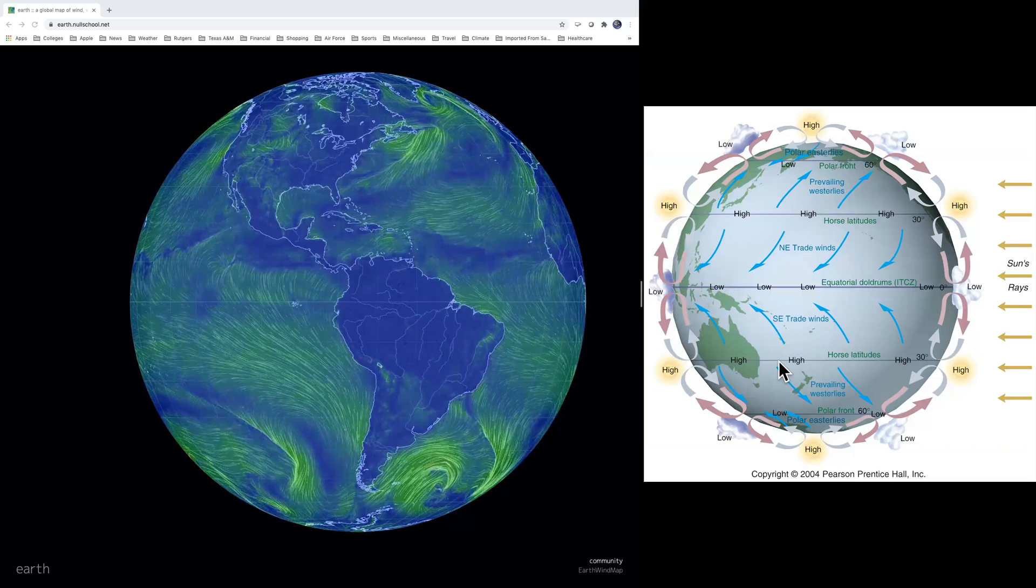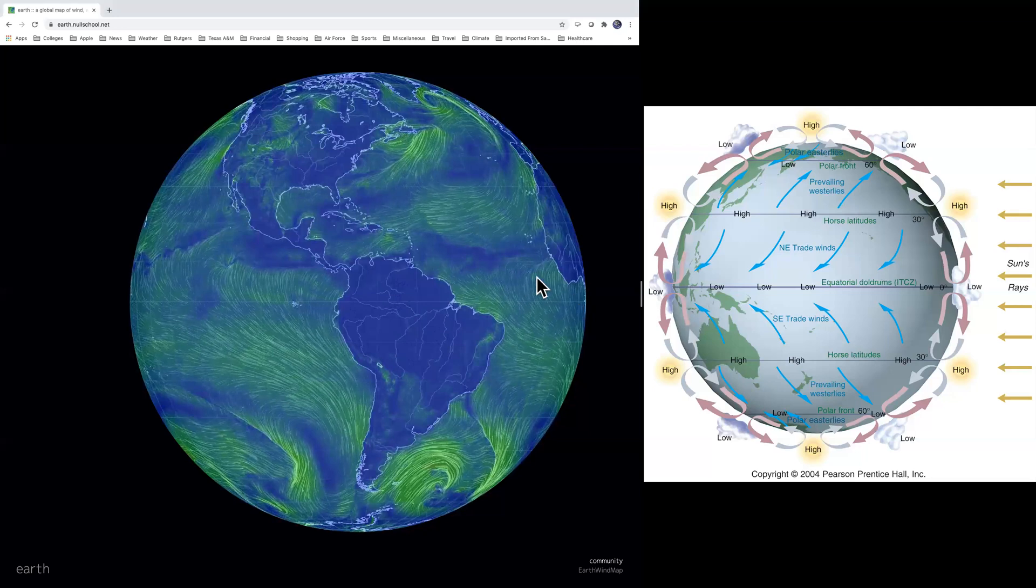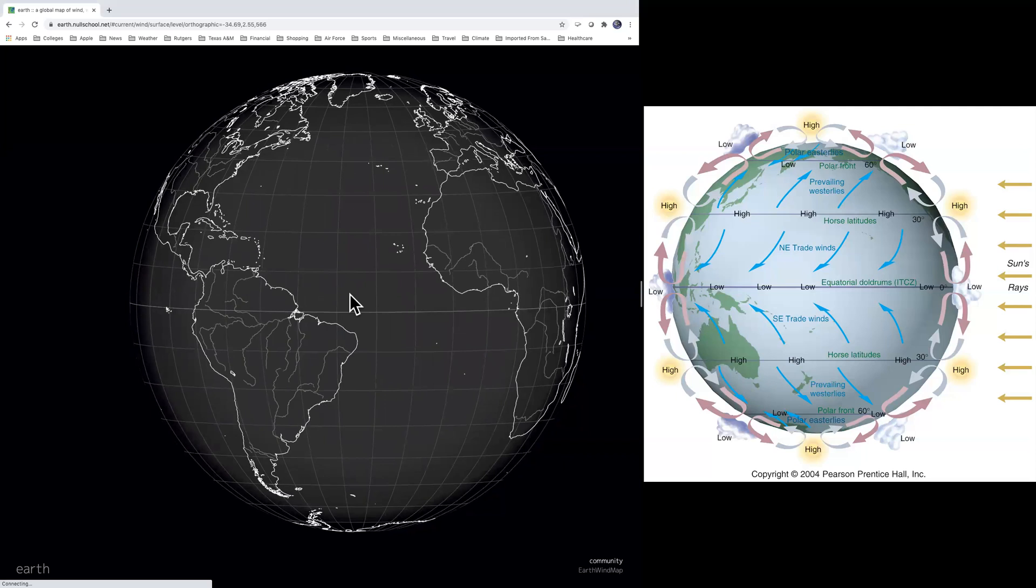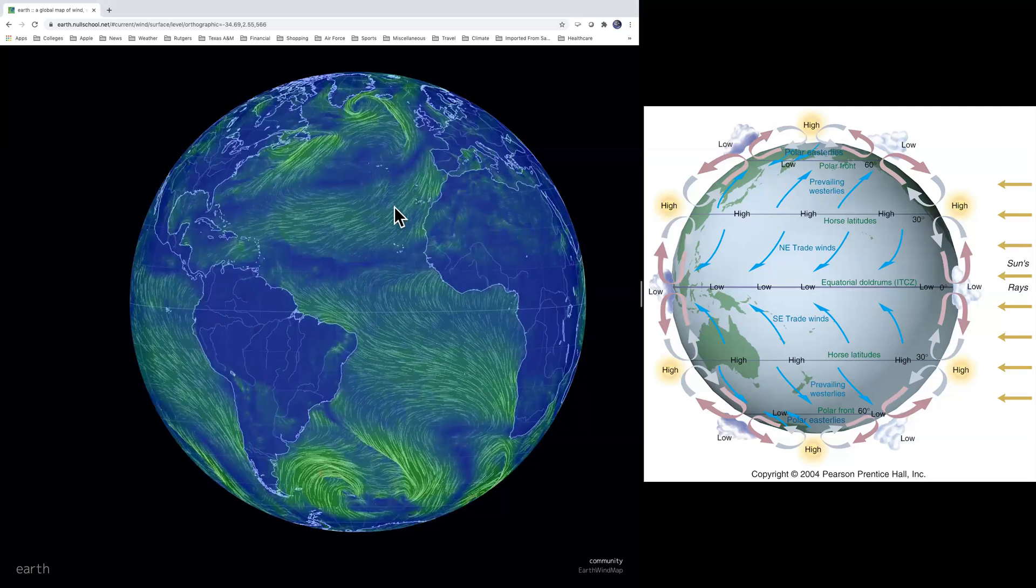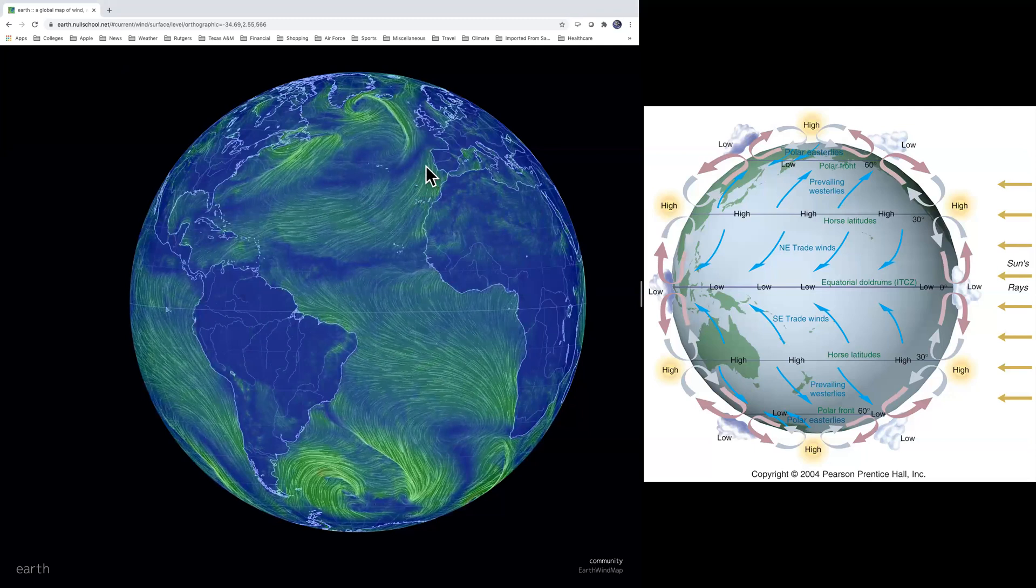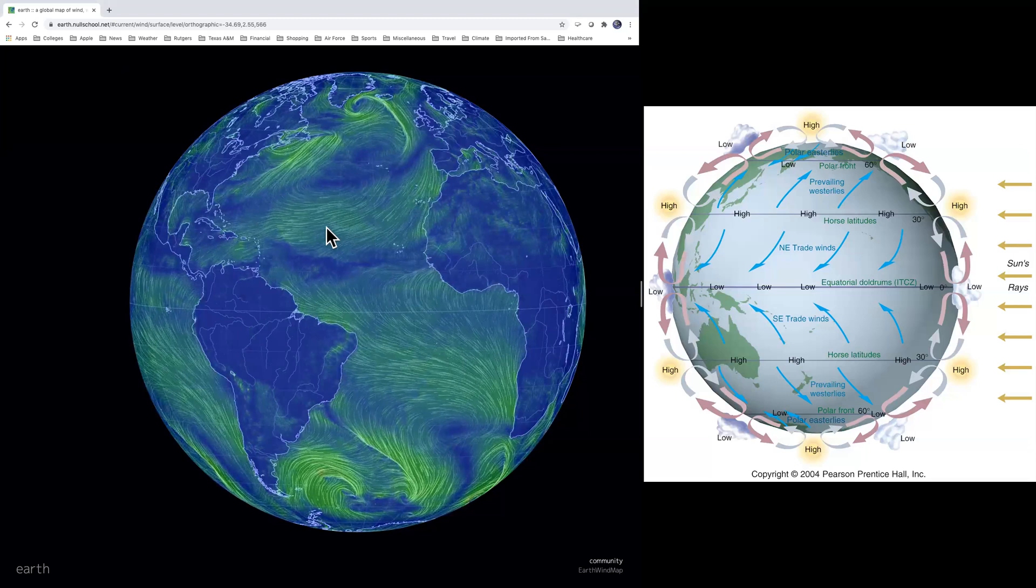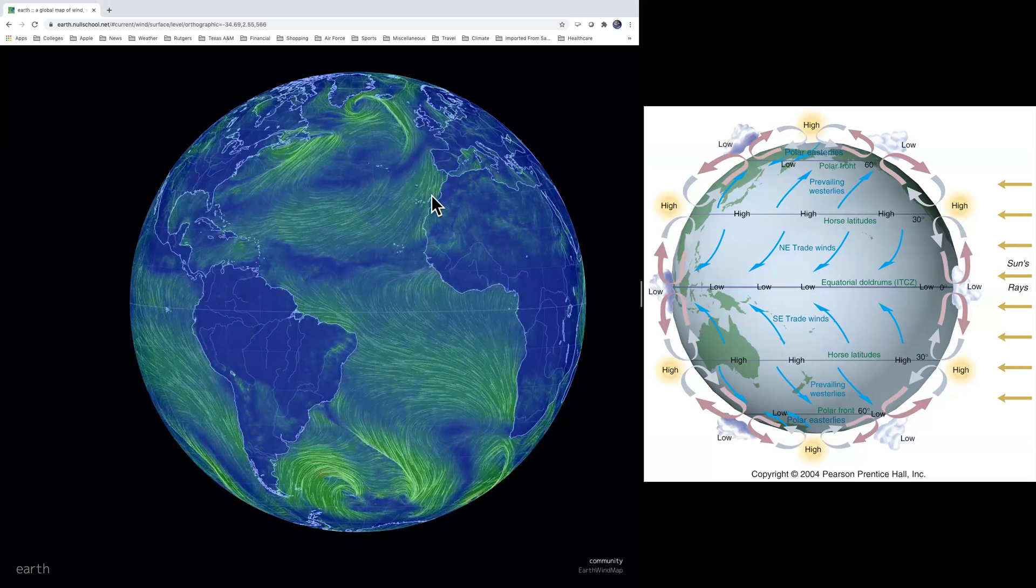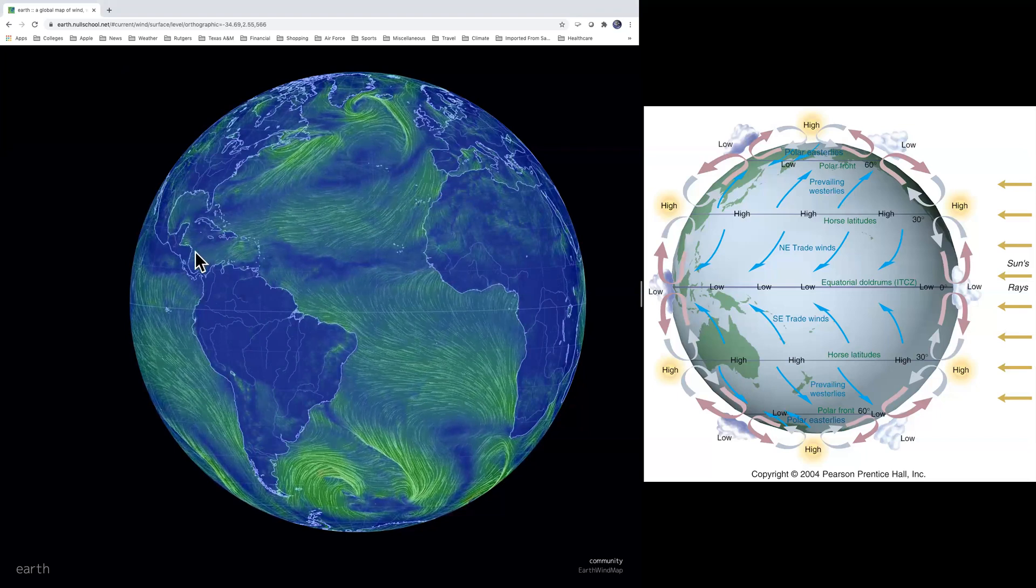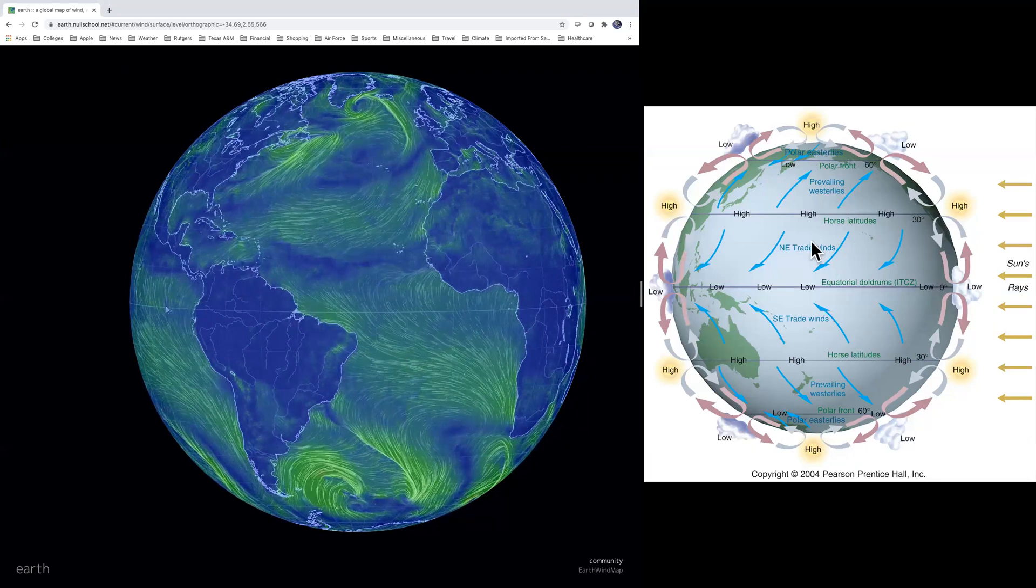So I wanted to use the earth wind map to show you where the earth does approach that. So here we have the northeast trade winds. And see them? These are the trade winds right here. Notice they blow out of the northeast all the way from basically the northwestern coast of Africa, all the way to the Caribbean.